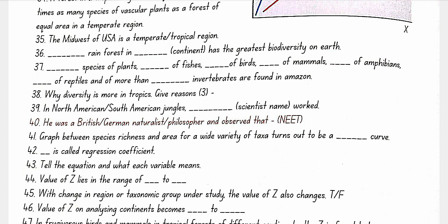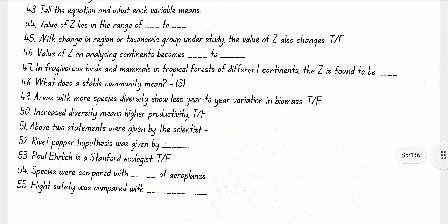The graph between species richness and area for a wide variety of taxa turns out to be a rectangular hyperbola. The regression coefficient Z gives the equation: Log S = Log C + Z Log A. The value of Z lies in the range of 0.1 to 0.2, but when analyzing continents the value changes to 0.6 to 1.2. For frugivorous birds and mammals in tropical forests, Z is found to be 1.15.